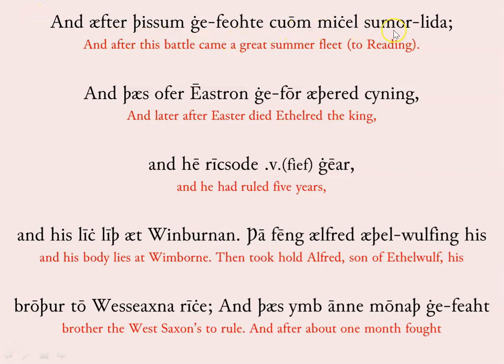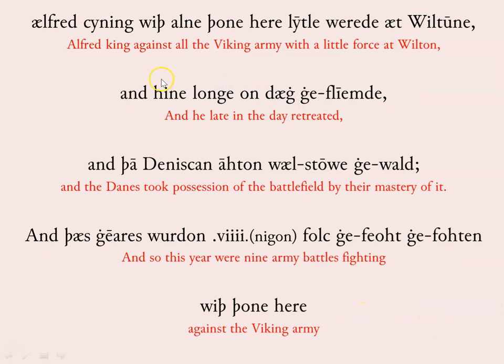The Chronicle then records: 'And after thysm gefeohte com micel sumor lid, and thas ofer Eastron for Aethelred Cyning, and hea rixode fif gear, and his lic lith at Winburnan. Tha feng Aelfred Aethelwulfing, his brothur, to Wesseaxna rice, and thas ymb ane monad gefeaht Aelfred Cyning wyth alne thone here lut lawere de at Wiltwne.' — After these battles, King Æthelred died and Alfred his brother succeeded to the kingdom of Wessex. Within a month, Alfred fought against the whole army at Wilton, and the Danes kept the field but fought against him that year nine times.